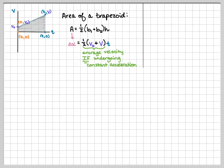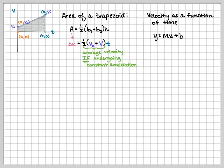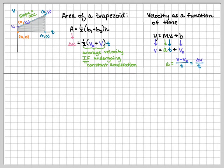If we write an equation for this velocity graph using slope-intercept form, fitting it to y = mx + b: on the y-axis we have velocity, the slope is acceleration, the horizontal axis is time, and the y-intercept is the initial velocity v₀. Rearranging, we get the definition of acceleration — acceleration is defined as the change in velocity over time. So from the geometry of the graph, the area under the curve gives us the displacement equation, and slope-intercept form gives us v = v₀ + at.